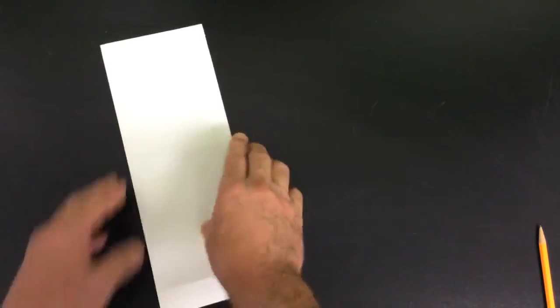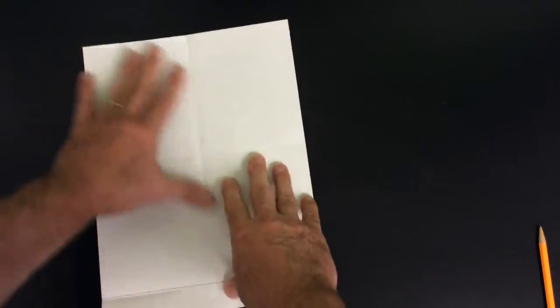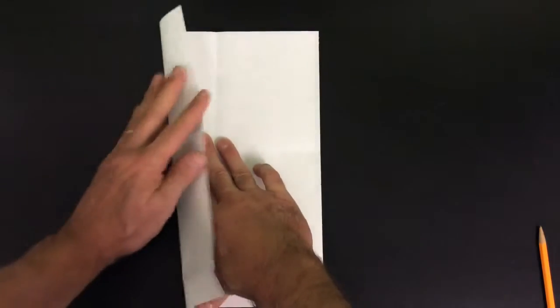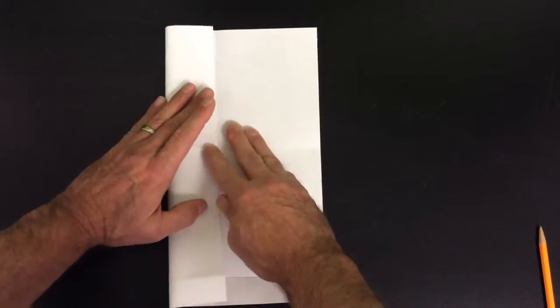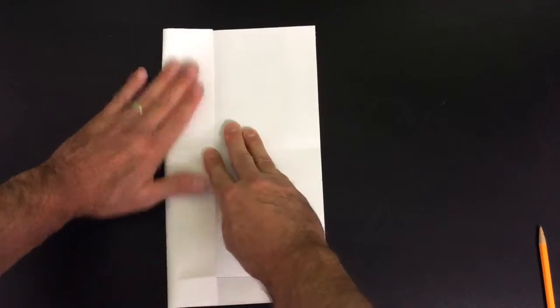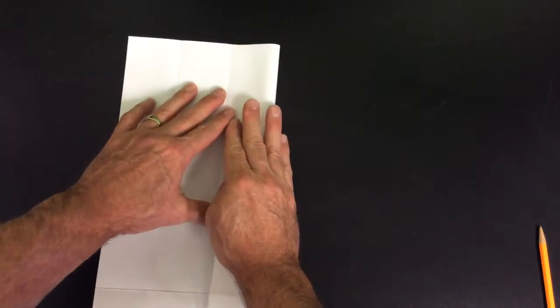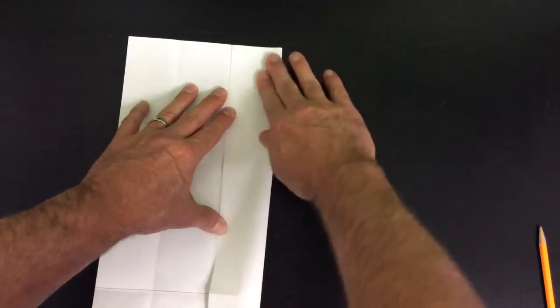Crease that. Okay, then open it, and then take this side and fold it to the middle, and crease that side. Then take this side and fold it to the middle, and then you have the four parts that you need.